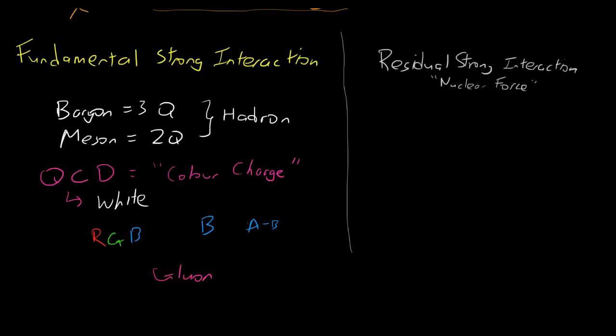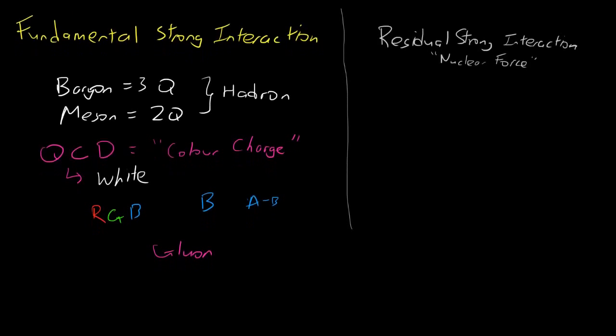So let's talk about two baryons that we know about a lot. The first one is called a proton. The second is called a neutron. And a proton is made of three quarks, two up quarks, and one down quark. Whereas a neutron is made of two down quarks, and one up quark.